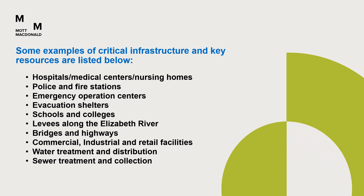Some examples of critical infrastructure and key resources include hospitals and medical centers, nursing homes, police and fire stations, emergency operation centers, evacuation shelters, schools and colleges, levees along the Elizabeth River, bridges and highways, commercial, industrial, and retail facilities, water treatment and distribution, and sewer treatment and collection.